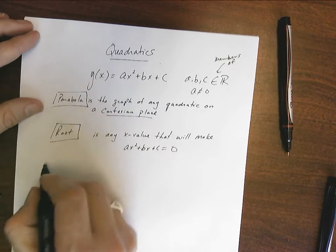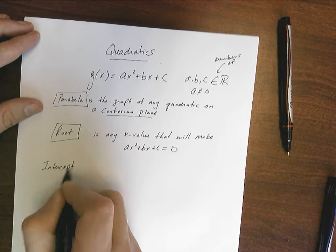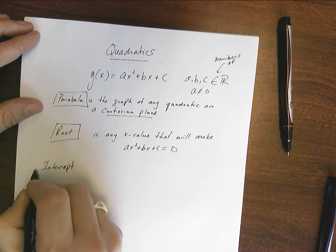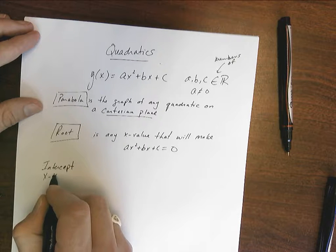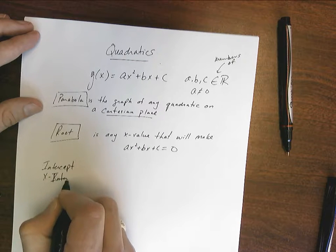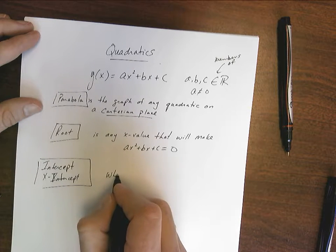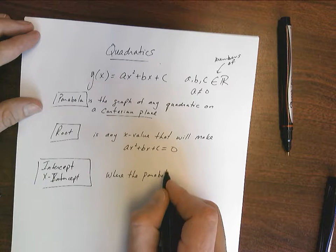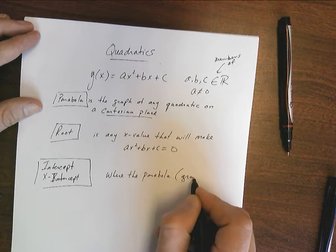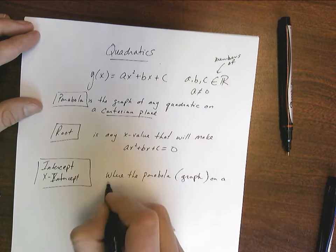Let's talk about an intercept. An intercept is actually short form for an x-intercept in this case. And an intercept is where the parabola, which again is the graph on a Cartesian plane,